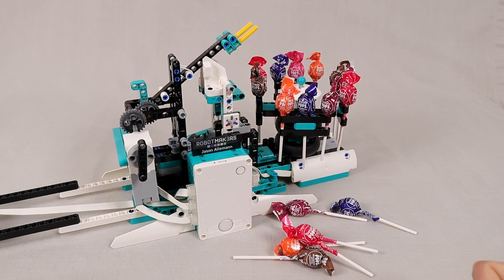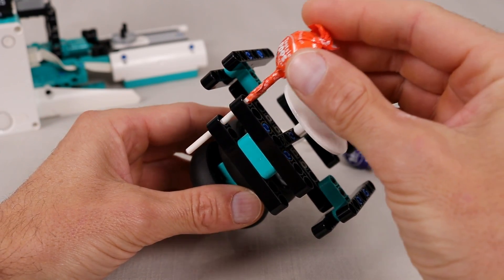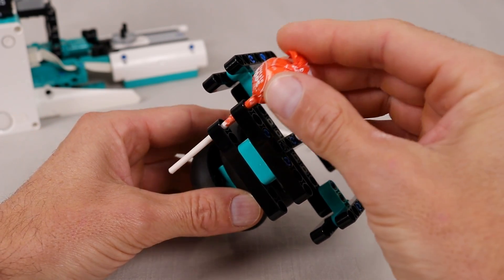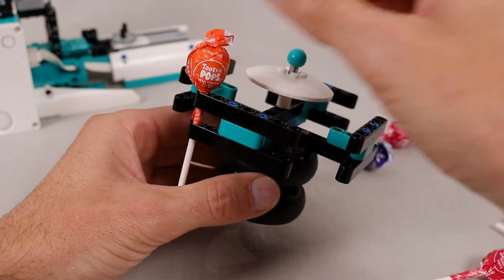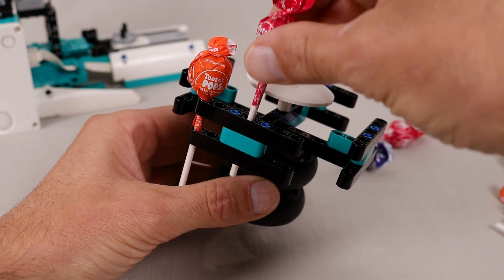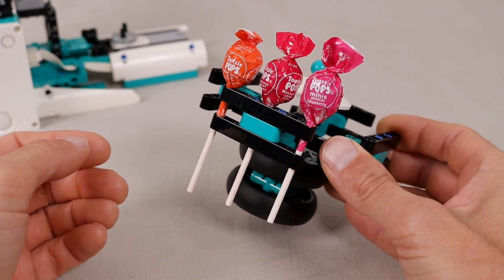So how does it all work? I noticed pretty early on in the design process that the lollipop stems fit loosely through Technic holes, so I ended up designing this rotating supply where they are held vertically in these lift arms. They sit in there pretty loosely, which is essential for them to be removed by the catapult arm.